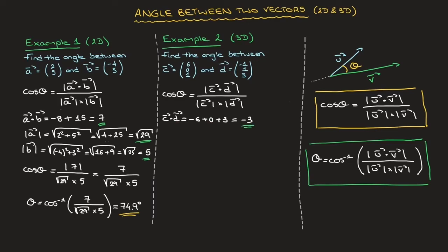Now we calculate the magnitude of c. The magnitude of c is equal to the square root of 6 squared plus 0 squared plus 1 squared, which is the square root of 36 plus 0 plus 1. Adding all that together, that's equal to the square root of 37.